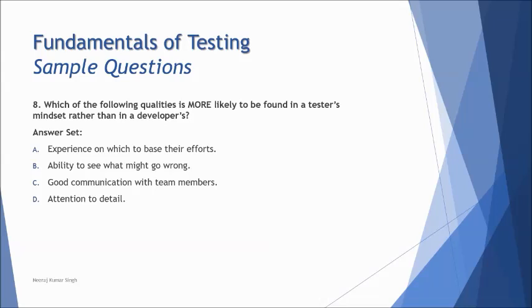The last one, number eight: which of the following quality is more likely to be found in a tester's mindset rather than in a developer's? So we were just talking about the same in the previous tutorial. So I think that should be again straightforward and easy to understand, that it is B: ability to see what might go wrong will not be a developer's mindset. Experience on which to base their effort, that everyone follows. C: good communication with team members, that is common for everyone again, not specific to tester. And attention to details, that's again common to everyone, no matter which team you belong to. But ability to see what might go wrong would be a special skill set required by the tester compared to anybody else.